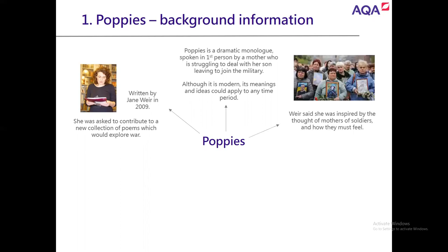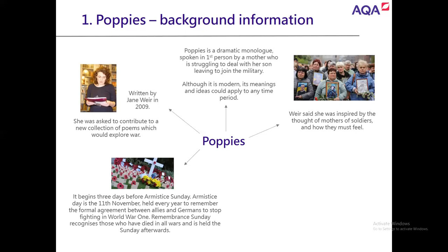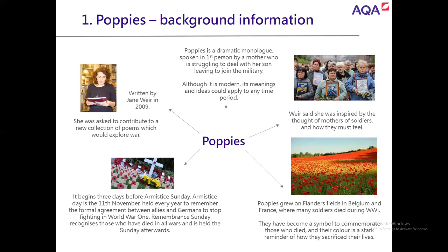Weir said she was inspired by the thought of mothers and soldiers and how they must feel. The poem begins three days before Armistice Sunday — Armistice Day is the 11th of November, held every year to remember the formal agreement between the Allies and Germans to stop fighting during World War I. Remembrance Sunday recognises those who have died in all wars, held on the Sunday after Armistice Day. Poppies grew on Flanders Fields in Belgium and France, where many soldiers died in World War I. They've become a symbol to commemorate those who died, and their colour is a stark reminder of the sacrifice of their lives.